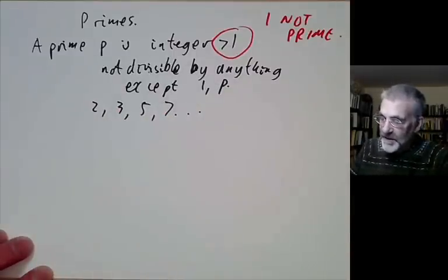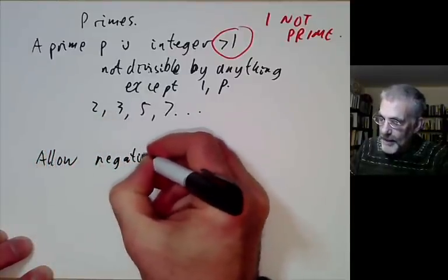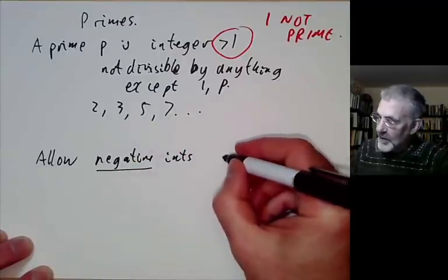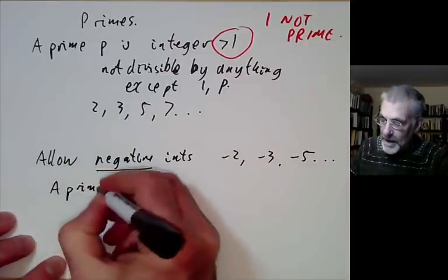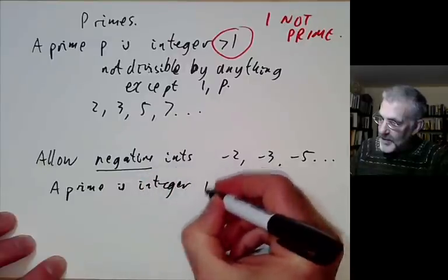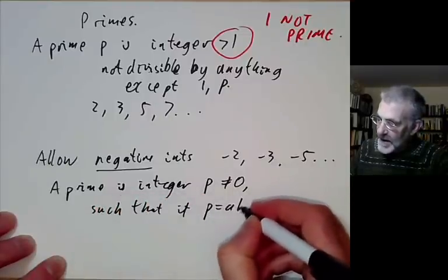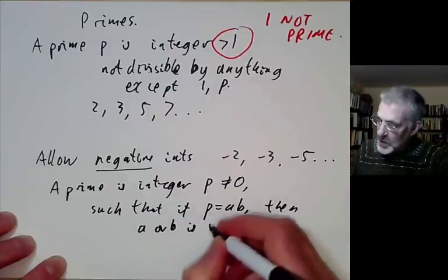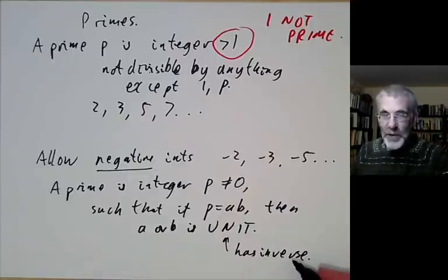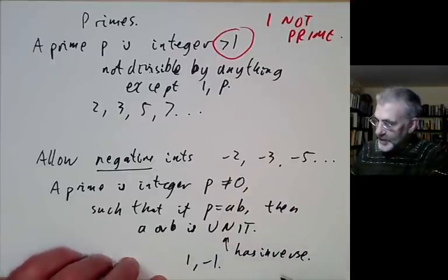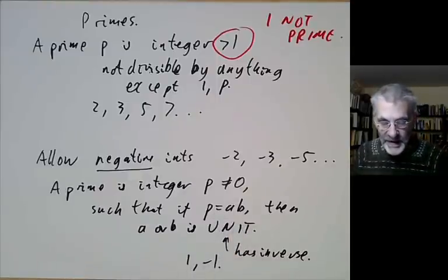That's a prime if you're talking about positive integers. There's an alternative definition where we allow negative integers. Here we want minus 2, minus 3, minus 5 and so on to count as primes. We would say a prime is an integer p not equal to 0 such that if p equals ab, then a or b is a unit. A unit is something that has an inverse — the only units for the integers are just 1 and minus 1. For more general rings, sometimes we allow other things to be units.